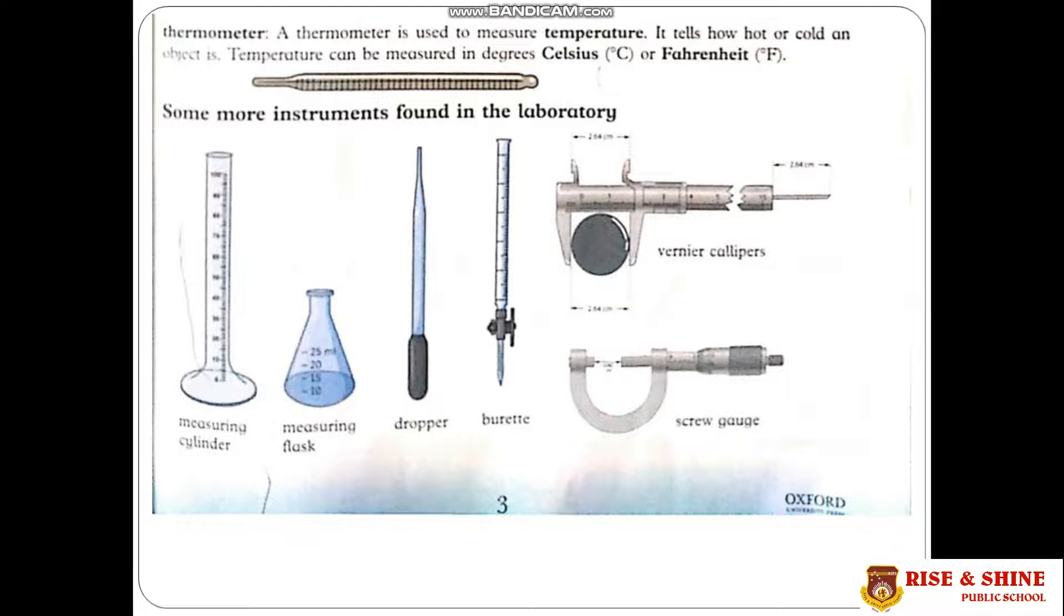Vernier caliper is an instrument used to measure the distance between two opposite sides of an object. Screw gauge is used to find the diameter of a steel rod that is used in buildings.